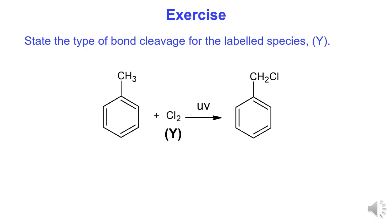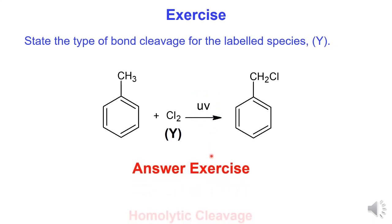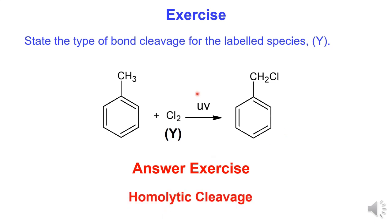Exercise: State the type of bond cleavage for the labelled species Y. Y is a chlorine molecule; it consists of a non-polar bond which is broken symmetrically, and this reaction is under UV condition. So the answer is homolytic cleavage.